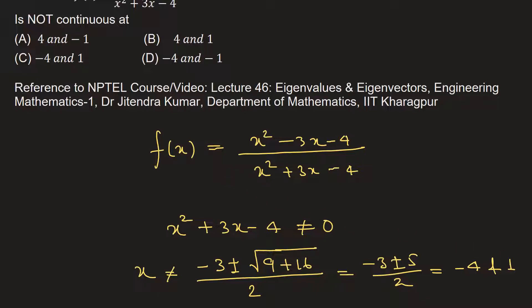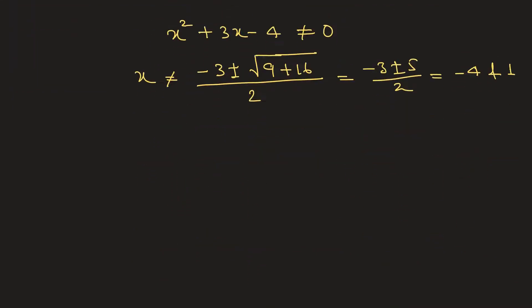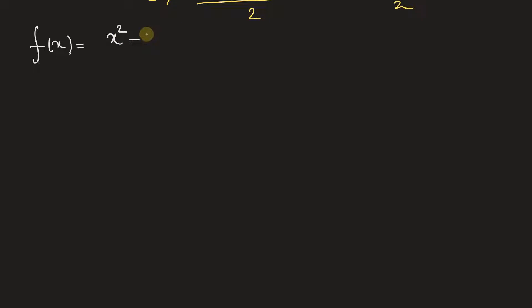We can also see the graph of f(x). So let's draw the graph of f(x) here. The function given is f(x) is equal to x square minus 3x minus 4 divided by x square plus 3x minus 4.